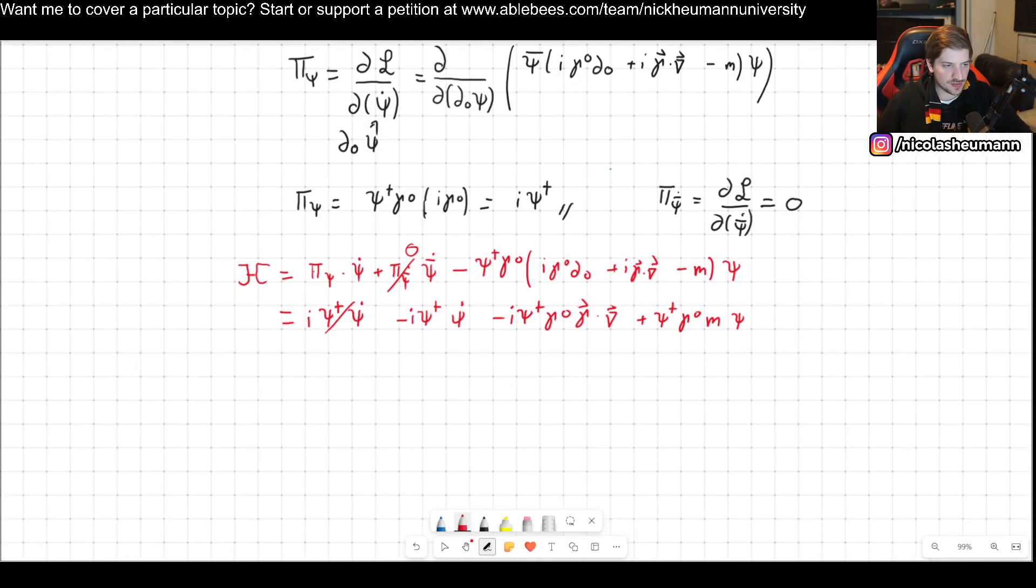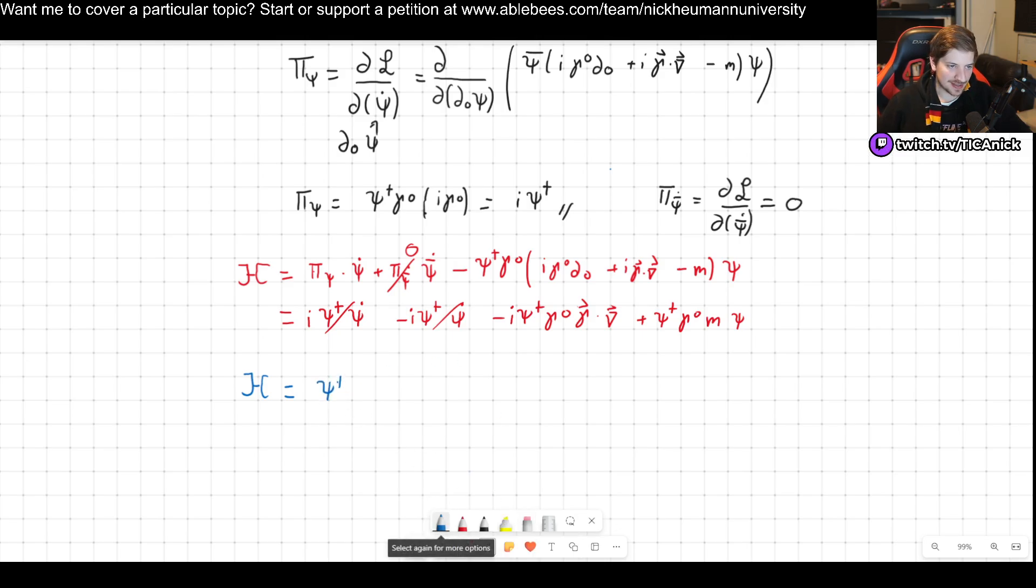So what do we got here? We have that these two will cancel out. So our Hamiltonian in the end here is going to be, and actually let's perhaps first factor out this, so psi dagger, and then we got minus i gamma 0 gamma dot the spatial derivatives plus gamma 0 m.